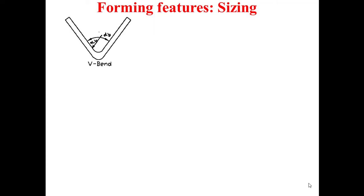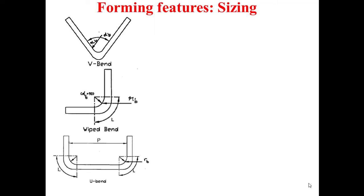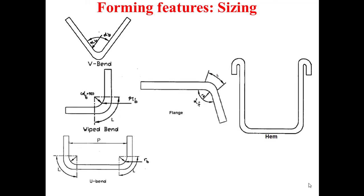Now I will talk about the forming features and their sizing. The forming features are the V-band, offset band, U-band — those are the band types — and also the flange and the hem. The sizing of the band is based on the angle of the band, the radius of the band, and the length of the band, which is equal to the sum of the two lengths of the two flat portions plus the length of the curvilinear portion. For the U-band, we also have P, which is the distance between the two bend lines.